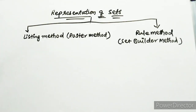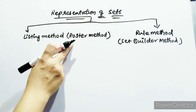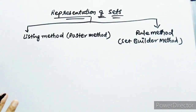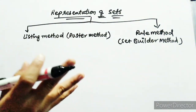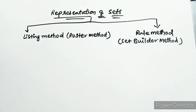We will discuss how to represent a set. There are two methods for representing a set: one is the listing method, also called the roster method, and the second one is the rule method, also called the set builder method.